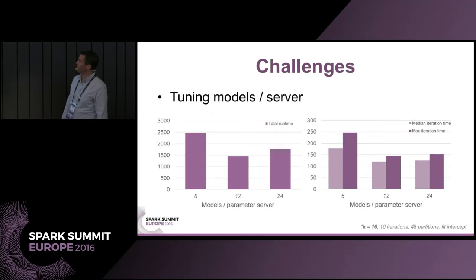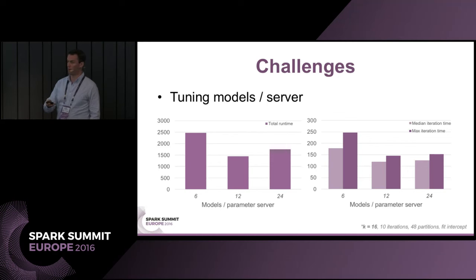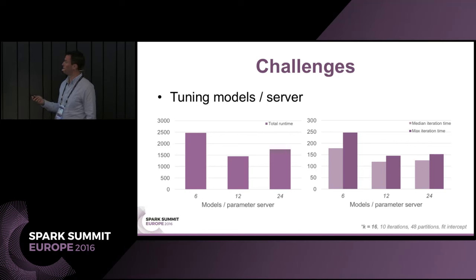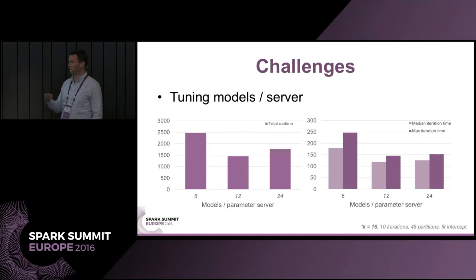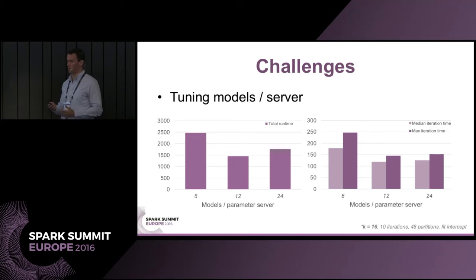As an example of tuning, I varied the number of models per server. Too little parallelism increases runtime, but beyond a sweet spot adding more doesn't help. I found that matching the number of Spark partitions roughly to the total number of parameter server partitions tends to be near the optimal configuration.